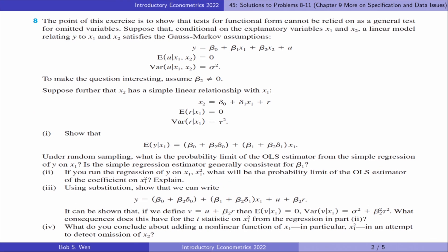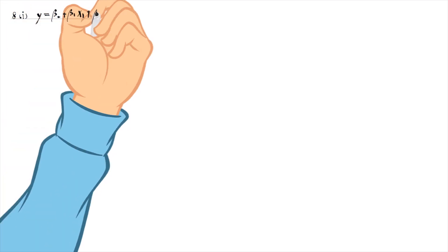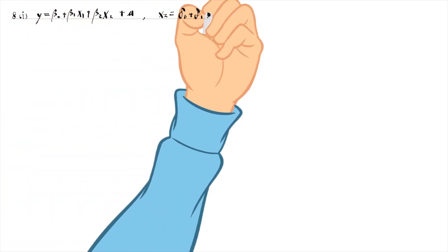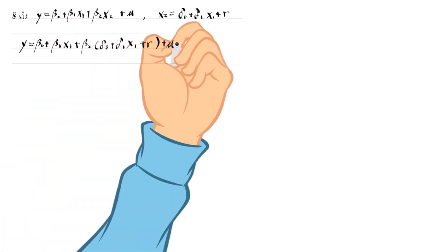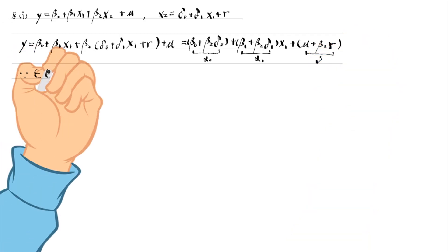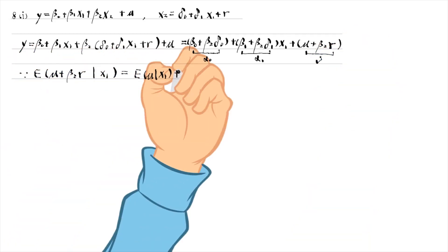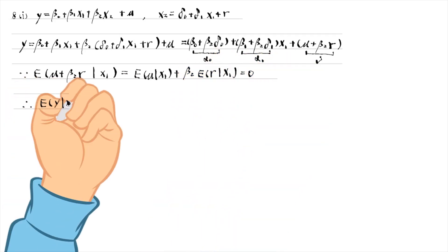For problem 8, we can substitute for x2 and write the outcome variable y as a function of x1 with a composite intercept and a composite error term. Since the expected value of the composite error term conditional on x1 is 0, we can show the result.